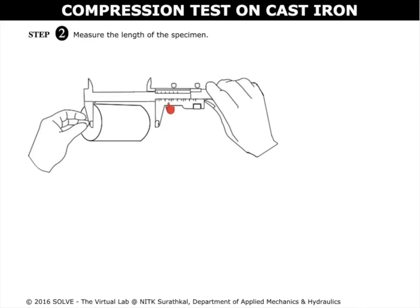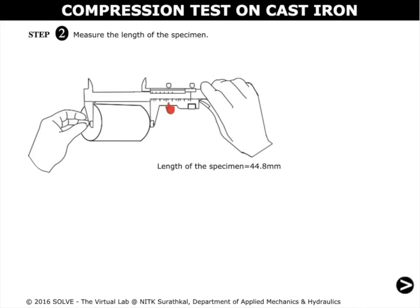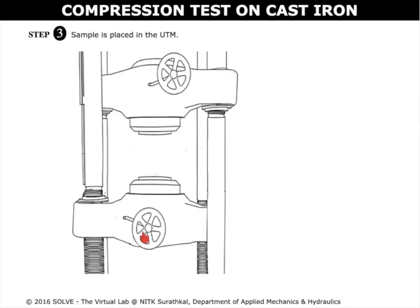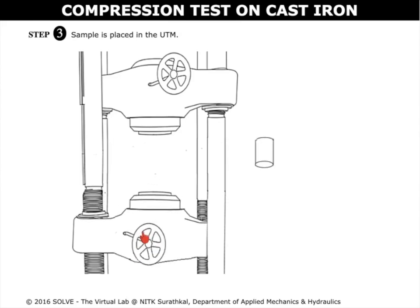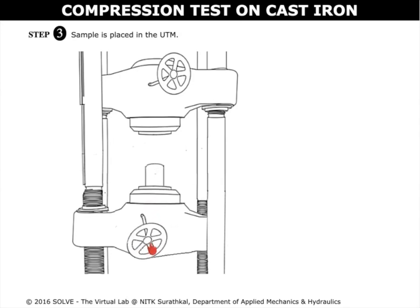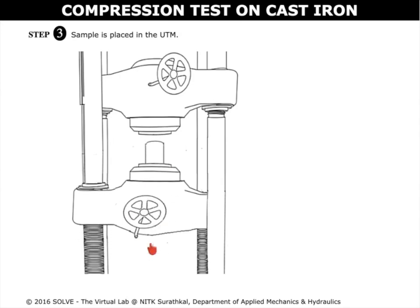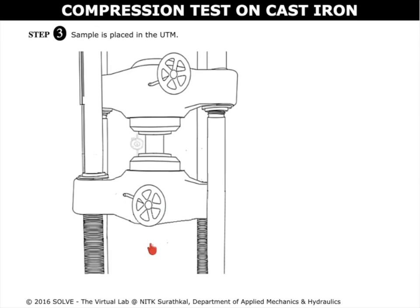Click on the vernier calipers to measure the length of the specimen. Click on the rotating lever to move the machine's bottom part. Now drag the specimen and place it in its position. Click once again on the lever to adjust the height, and then the dial gauge is mounted. Click on the knob to set the dial to zero.